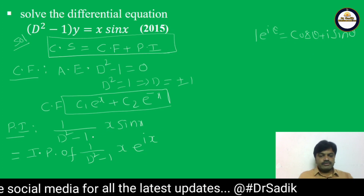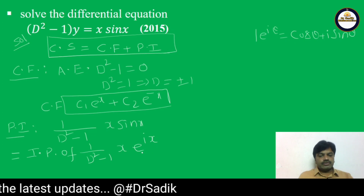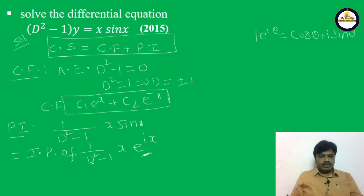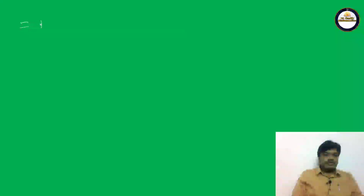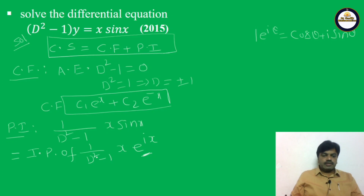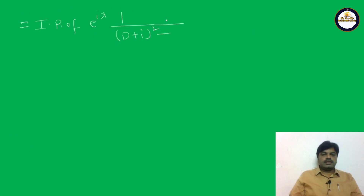Now it is Case 4. In Case 4, first write e^(iax) on the left-hand side of 1/f(D), then replace D by D+i. So this becomes the imaginary part of e^(ix) · (1/((D+i)² - 1)) · x.